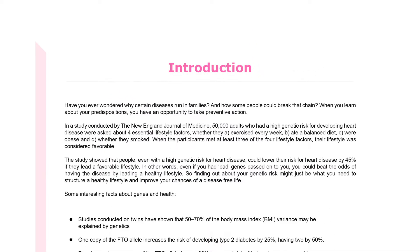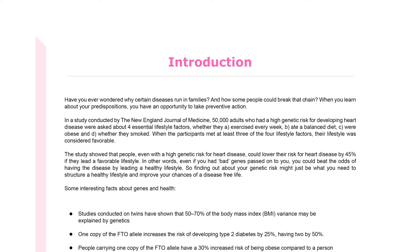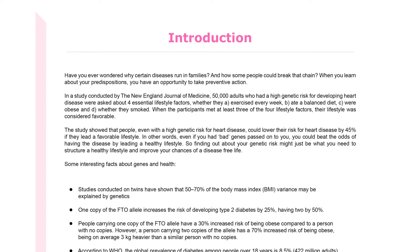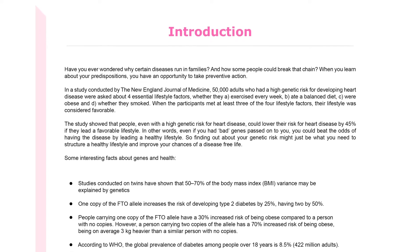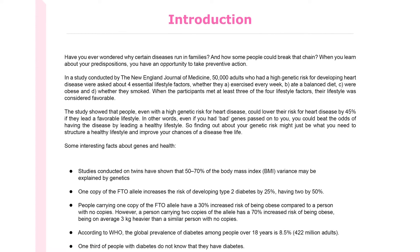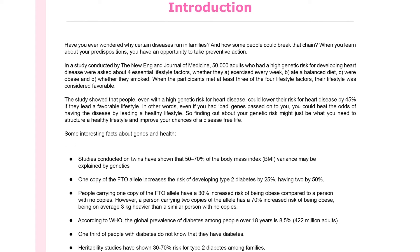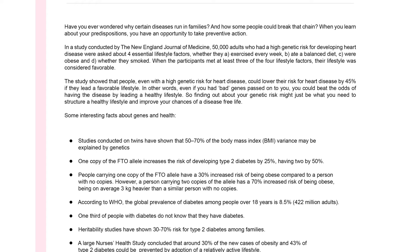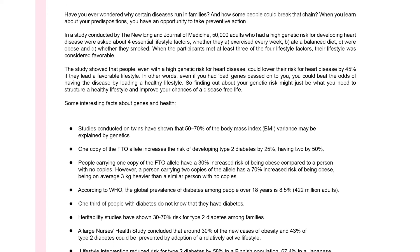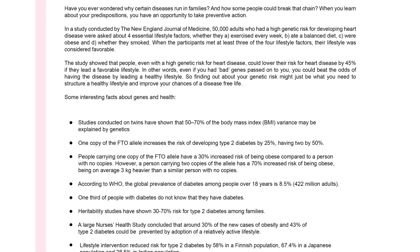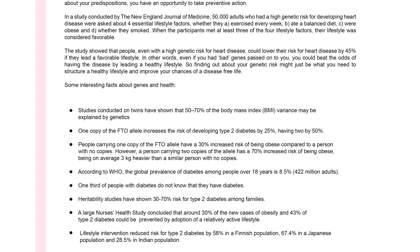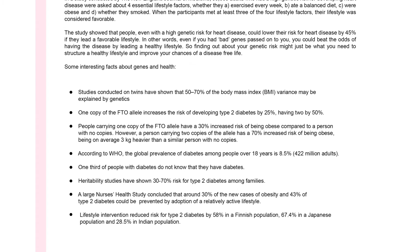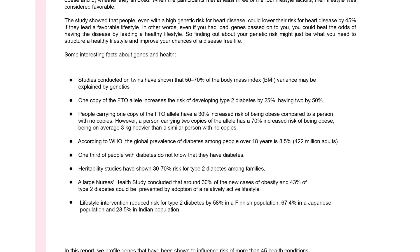You have an opportunity to take preventive action by changing your lifestyle. Research shows that lifestyle intervention reduces the risk of health conditions like heart disease and diabetes considerably. According to a study by the New England Journal of Medicine, even with a high genetic risk for heart disease, people can significantly lower their risk by leading a healthy lifestyle.